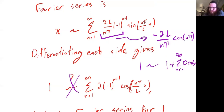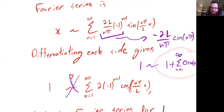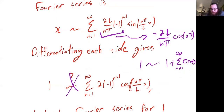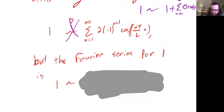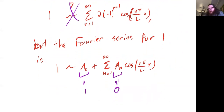To phrase it clearly: the Fourier series of the derivative of x is just 1, while the derivative of the Fourier series gives this non-constant expression. So the Fourier series of the derivative is not equal to the derivative of the Fourier series. This is a case where just taking the derivative of each side of the Fourier series doesn't match up with what we expect.